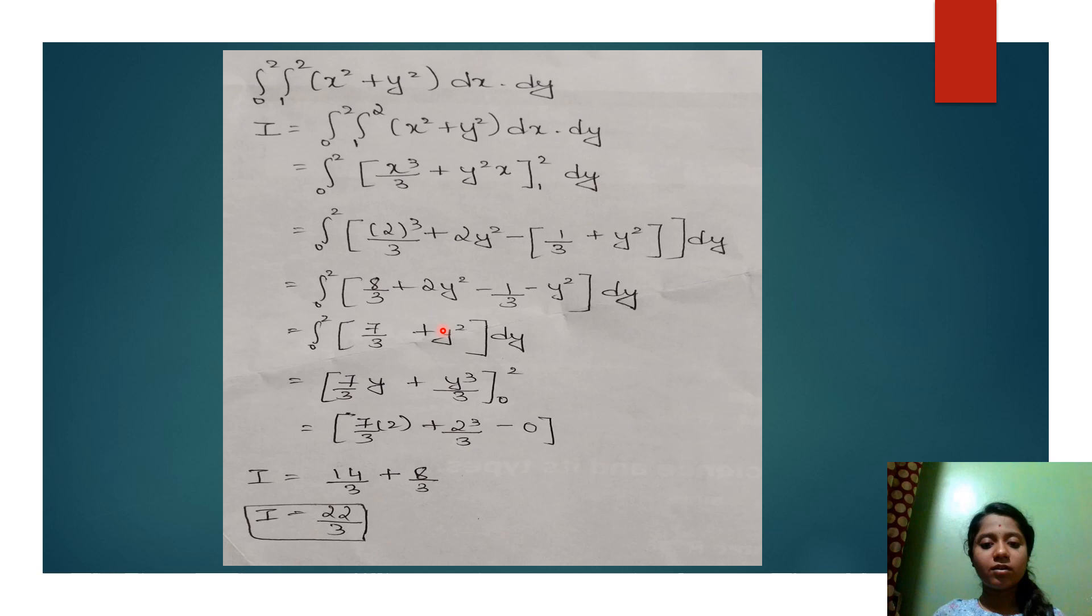Now we have got another equation that is 7 by 3 plus y square. Now we have to integrate this equation with respect to dy. 7 by 3 integrating with respect to dy is constant, so constant remains as it is.